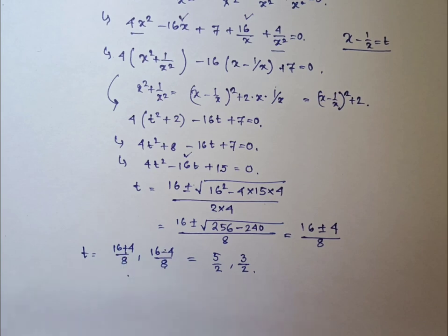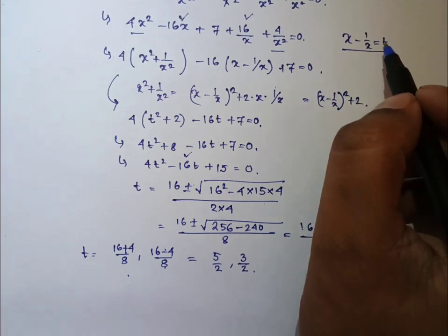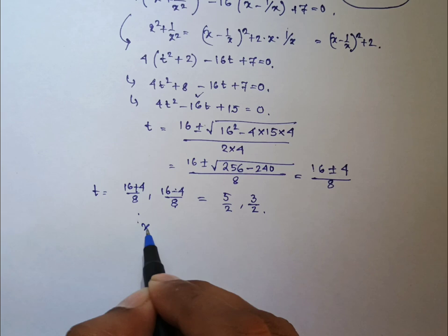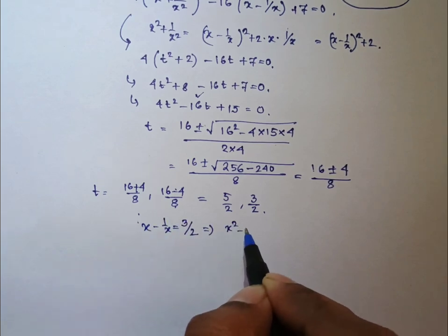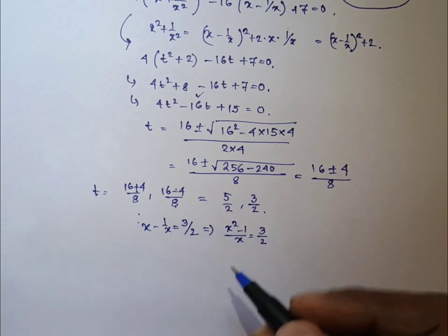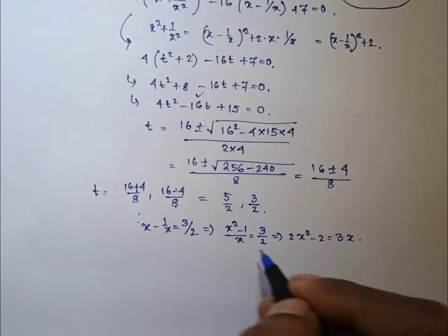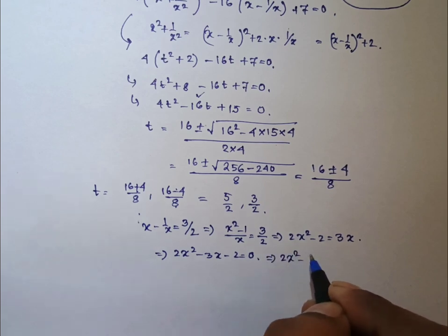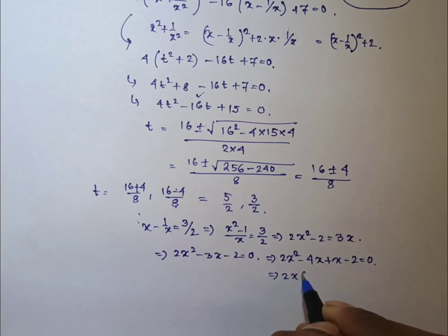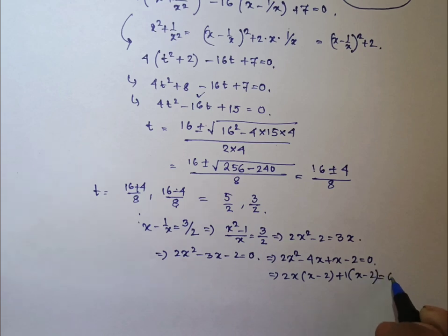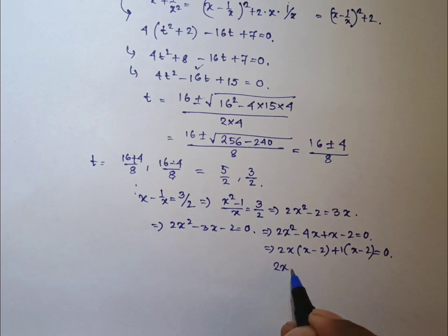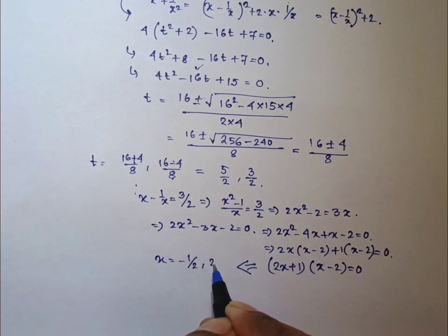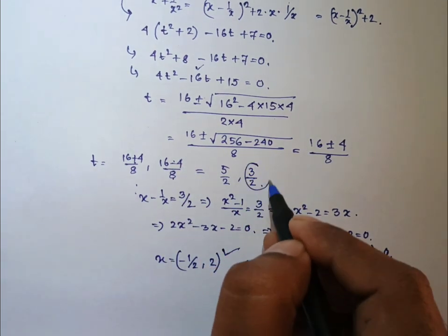Because 12 by 8 is 3 by 2 and 20 by 8 is 5 by 2. Now we will be having two cases. One is x minus 1 by x equal to 3 by 2. That is, x square minus 1 whole divided by x equal to 3 by 2. That means 2x square minus 2 equal to 3x, which means 2x square minus 3x minus 2 equal to 0. We can write it as 2x square minus 4x plus x minus 2 equal to 0. That is, 2x into x minus 2 plus 1 into x minus 2 will be 0, which means 2x plus 1 into x minus 2 equal to 0. So x equal to minus half or x equal to 2. These are two values for the equation when t equal to 3 by 2.